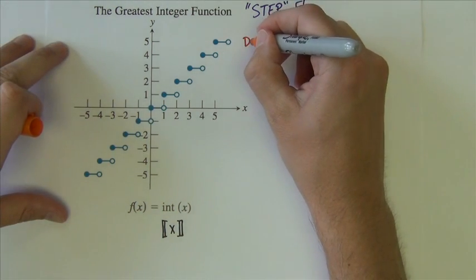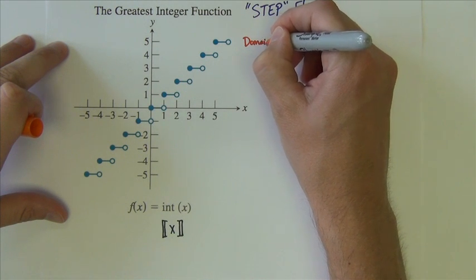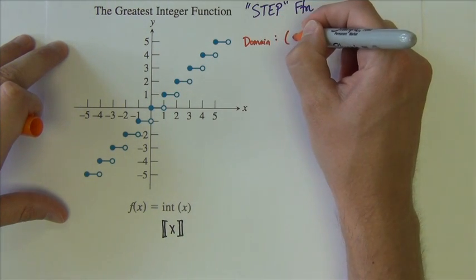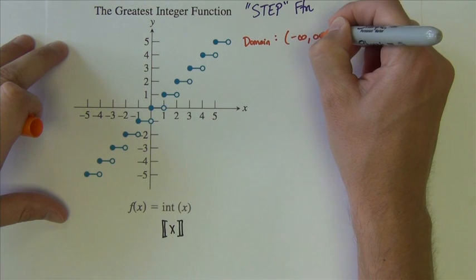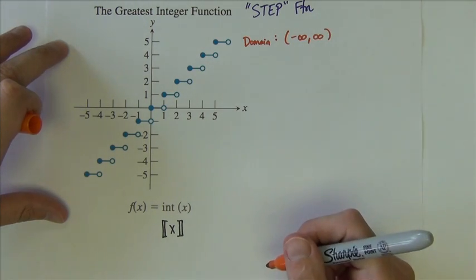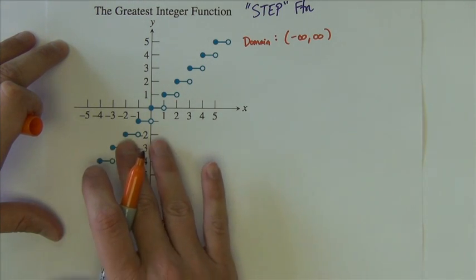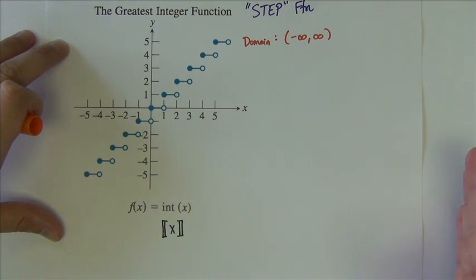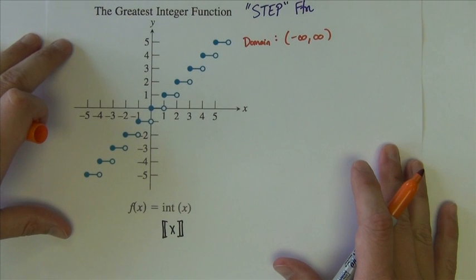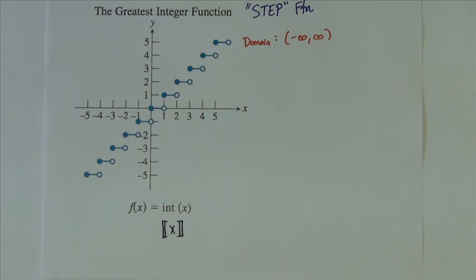Its domain is negative infinity to positive infinity. Even though there are lots of breaks in continuity here in the graph, it does contain every x value, as it stair steps in both directions on out forever.